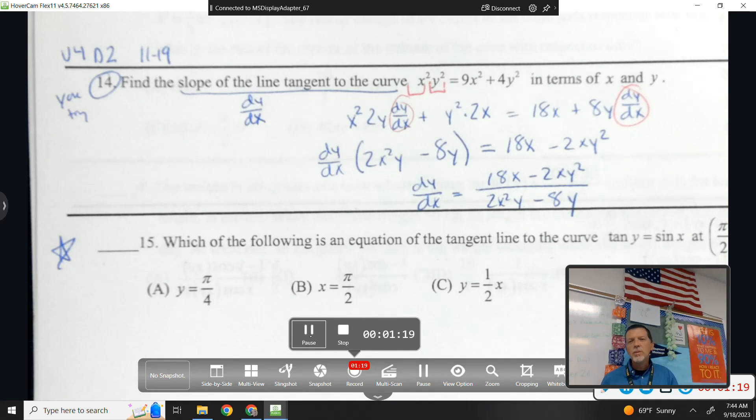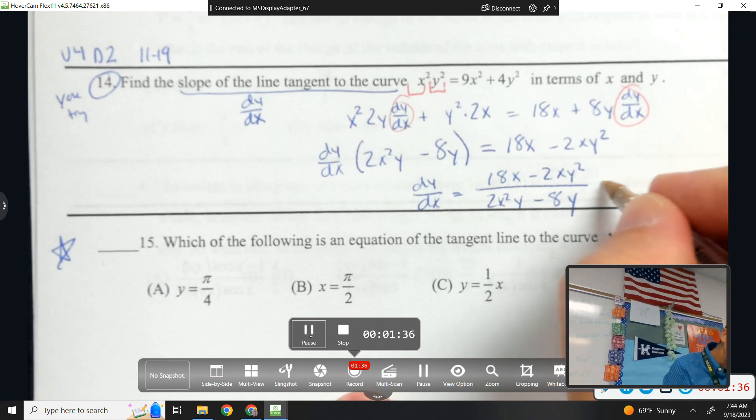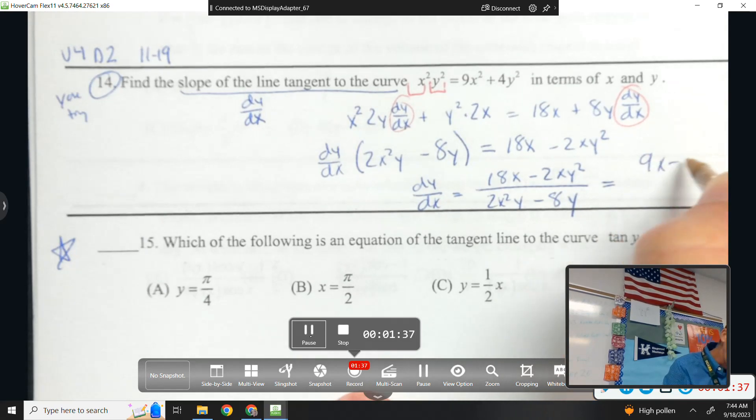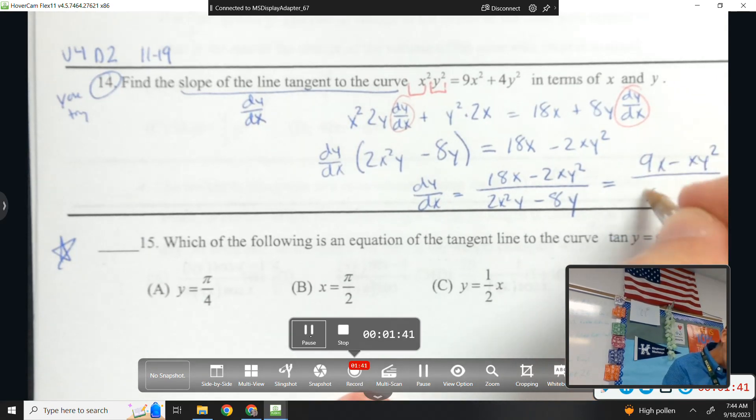There's a little bit more to do. What else could you do? And I'm sure the multiple choice would do the next step. You see anything else you could simplify algebraically? I can divide everybody by 2. So 9x minus xy squared over x squared y minus 8y.